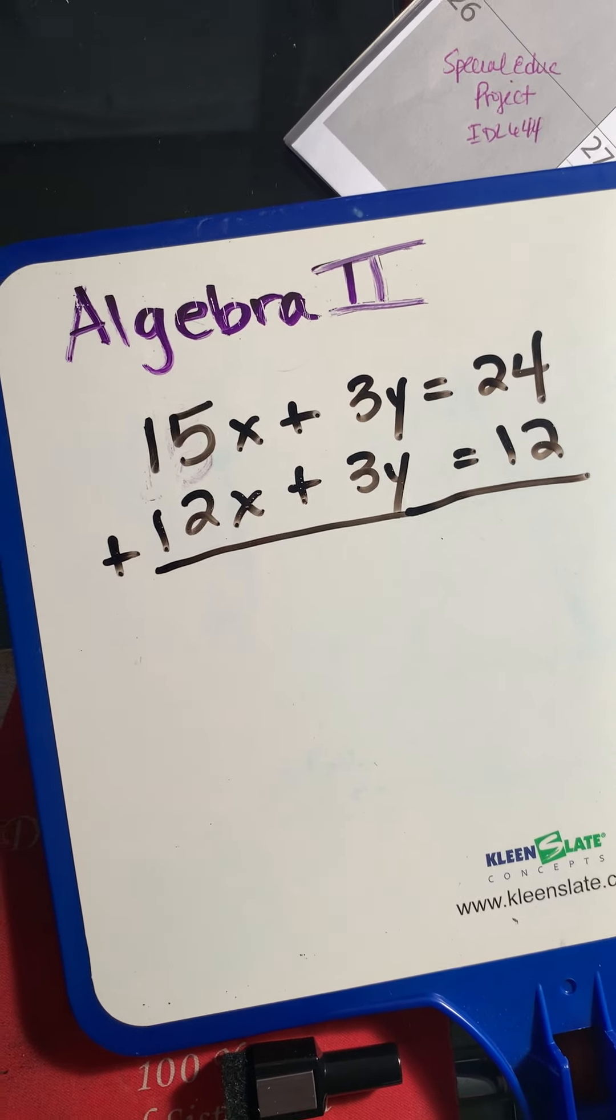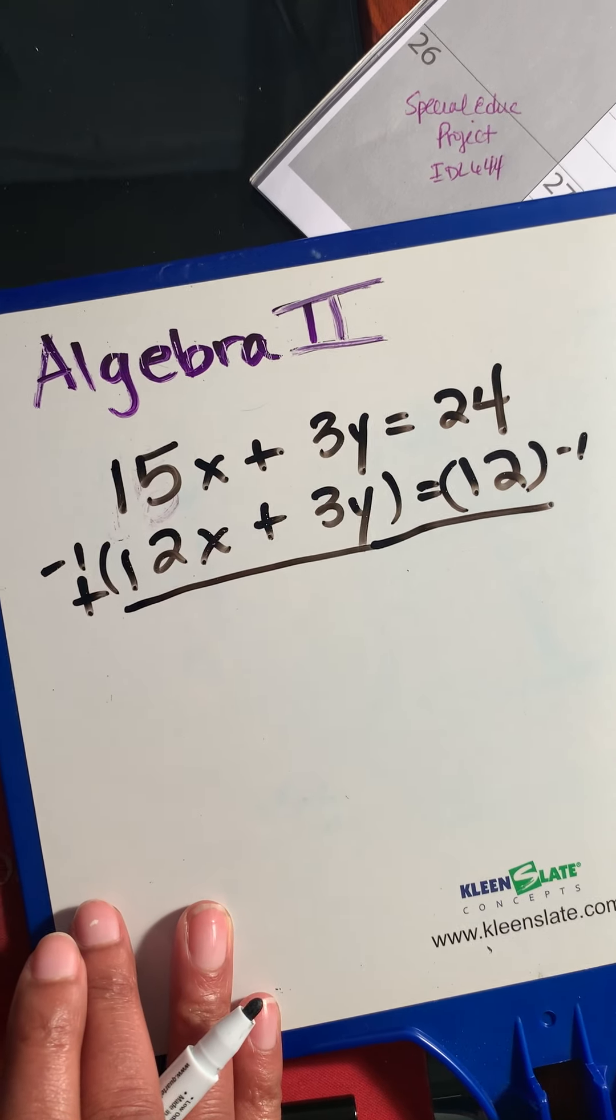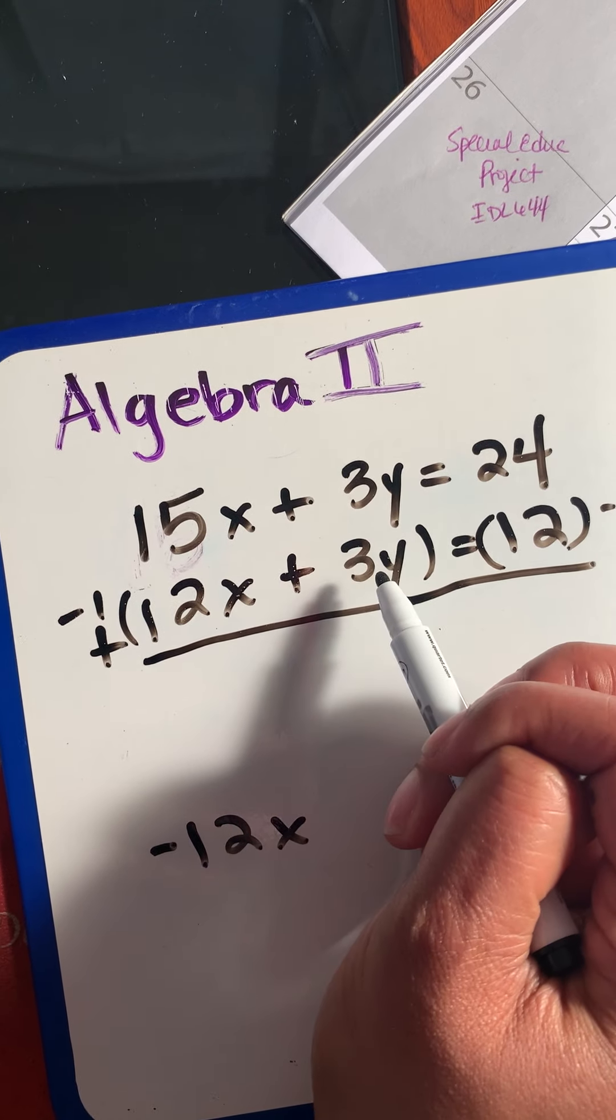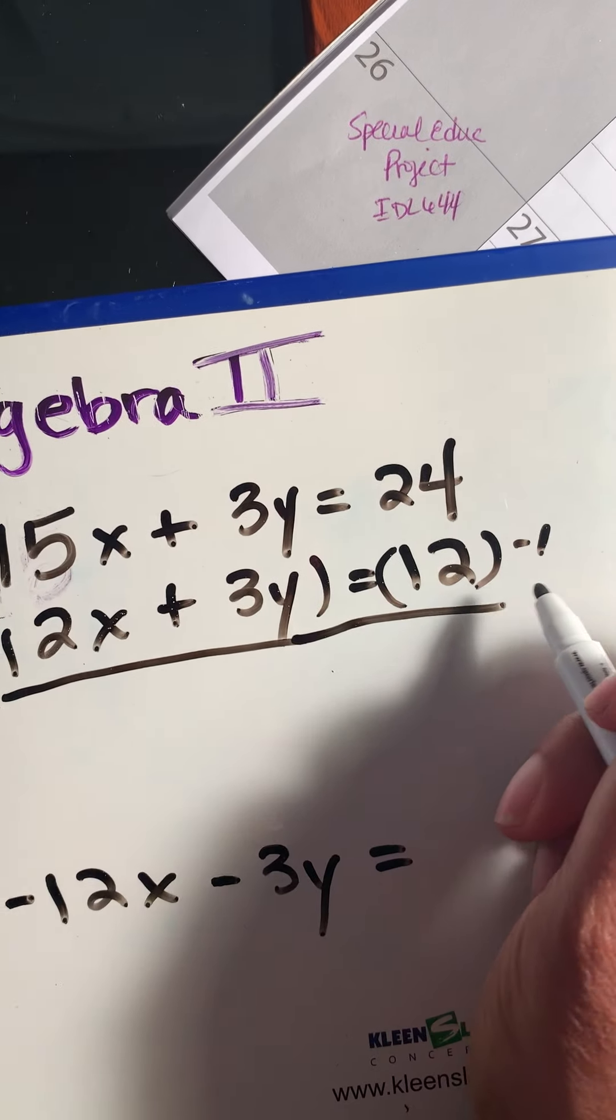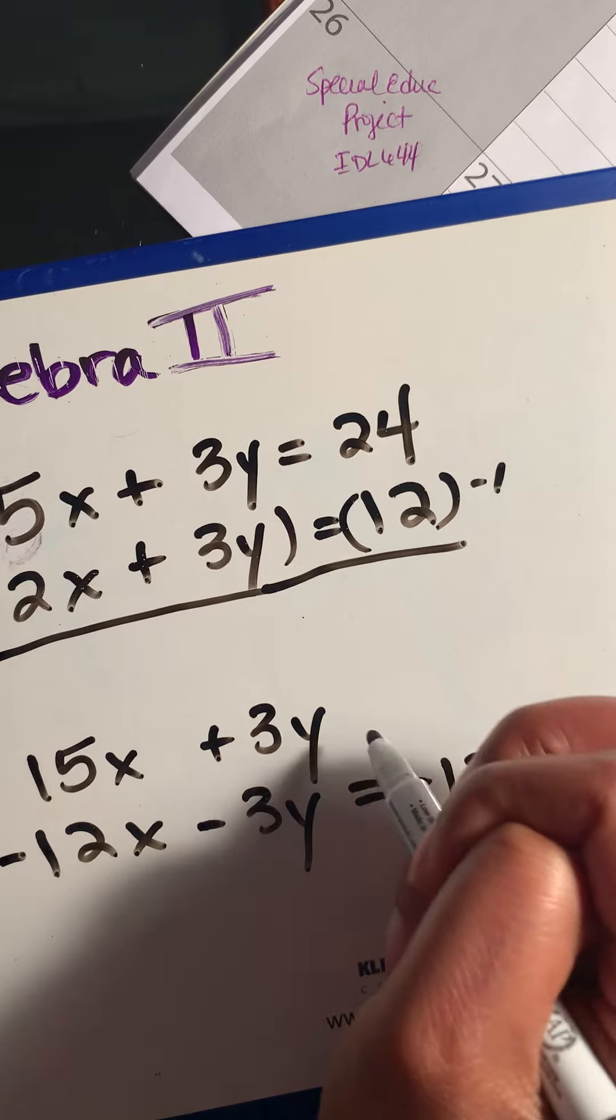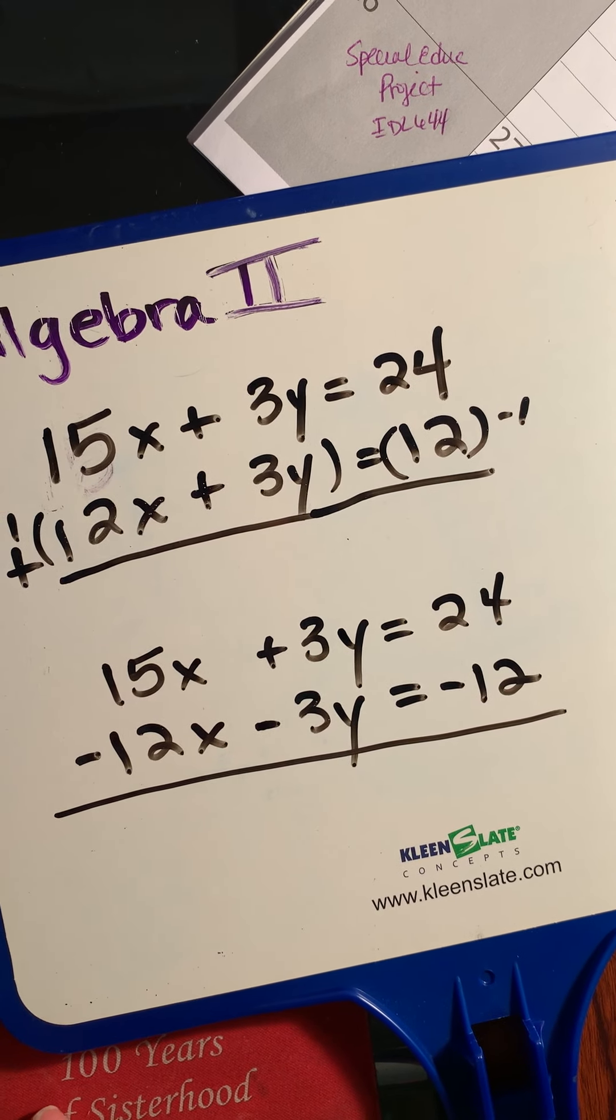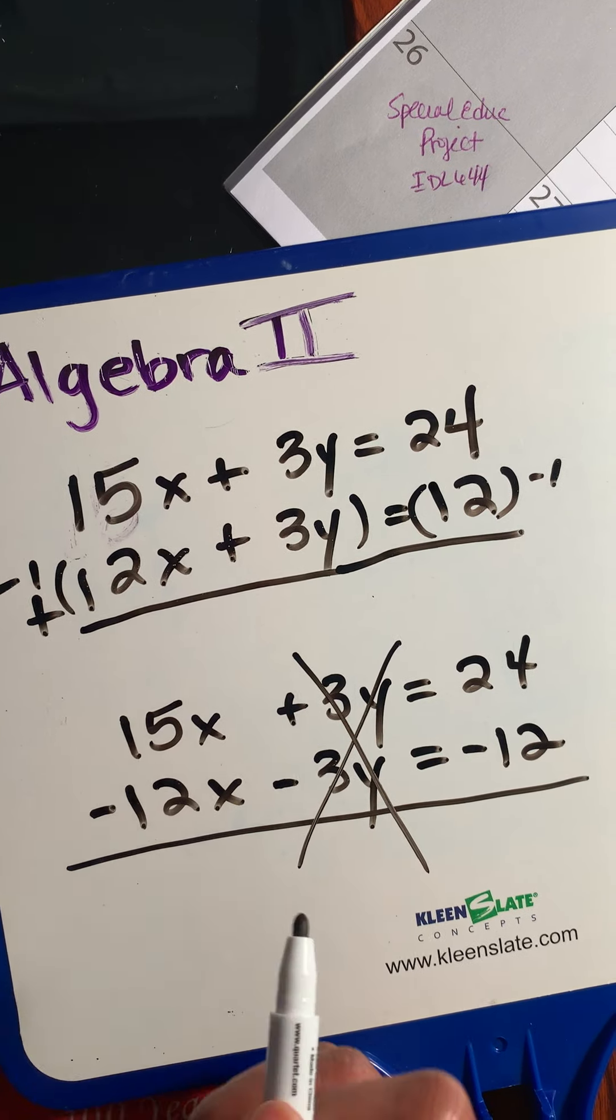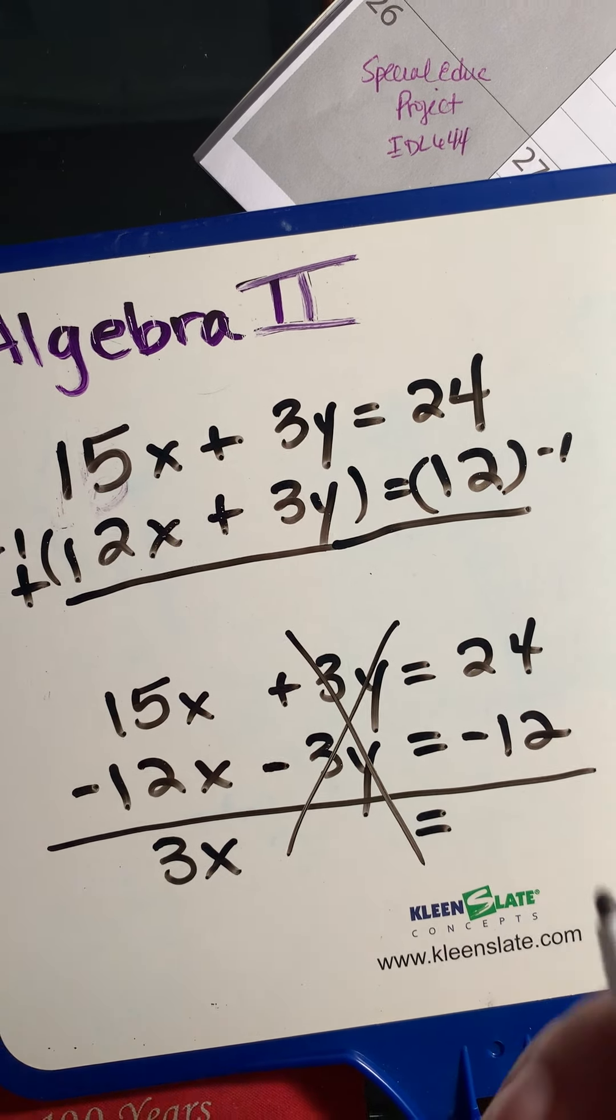So we can decide whether you want the top equation or the bottom equation. But what we're going to do is we're going to multiply a negative 1 all the way through. When I say negative 1, I just want you to start changing the signs. So that makes the positive a negative 12. The positive 3y becomes a negative 3y. We're just changing the signs. I'm leaving the top equation just like it is. Now, can I cancel out 3y minus 3y? If you put 3 minus 3 in the calculator, you're going to get 0, just like we talked about in class. 15 minus 12 is 3x. 24 minus 12 is 12.